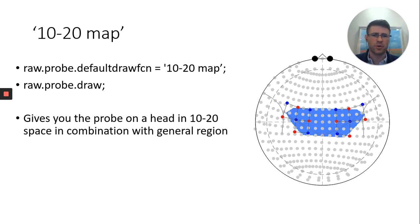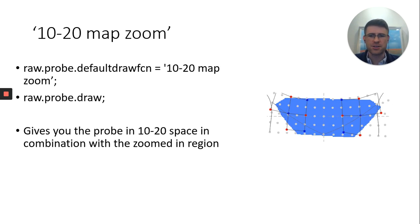There's also the 10-20 map. The map seems to cover really what the region that you're covering. So you'll notice the general region underneath the probe that you're getting. It also states red being sources and blue being detectors. You actually get a little bit more discrimination there. You can also use the 10-20 map zoom, and you'll notice now we're actually zoomed in on the probe. You see the region and only that. So it may be of interest if you're trying to actually show that in more detail.